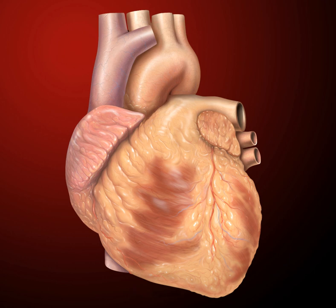The human heart is situated in the middle mediastinum, at the level of thoracic vertebrae T5–T8. A double membrane sac called the pericardium surrounds the heart and attaches to the mediastinum.